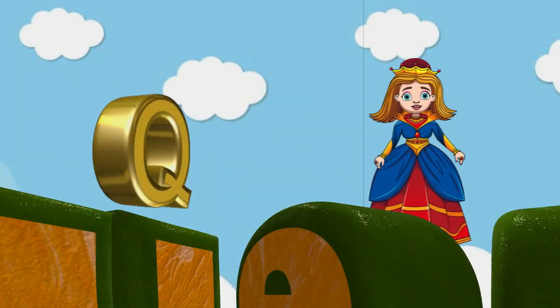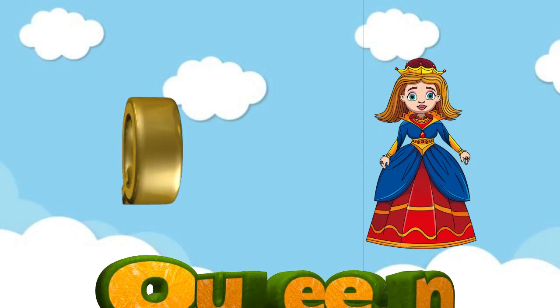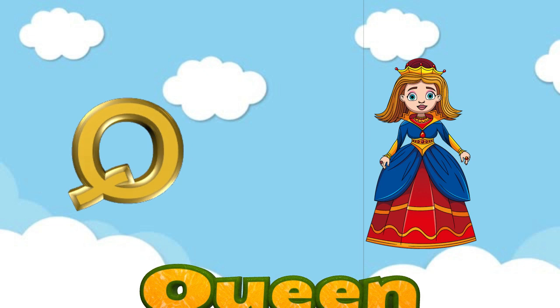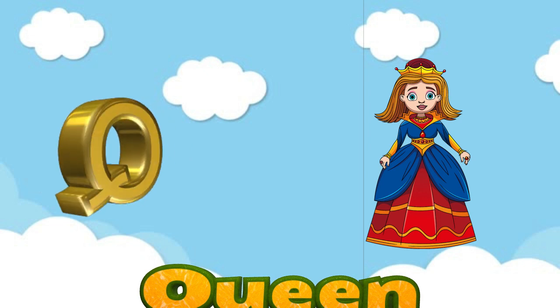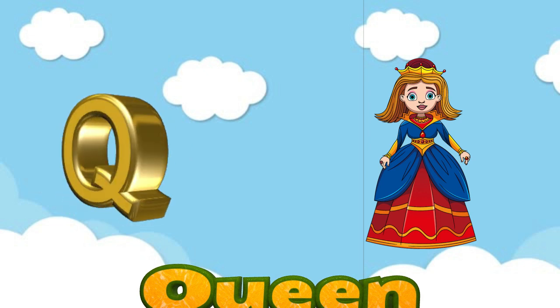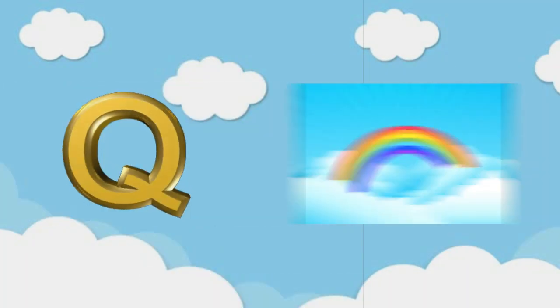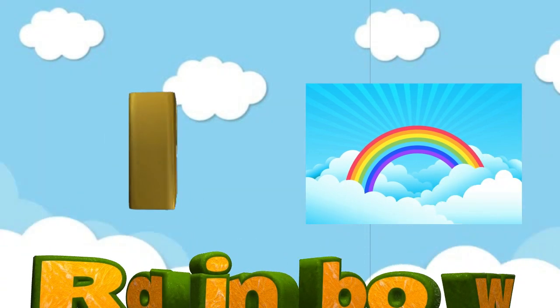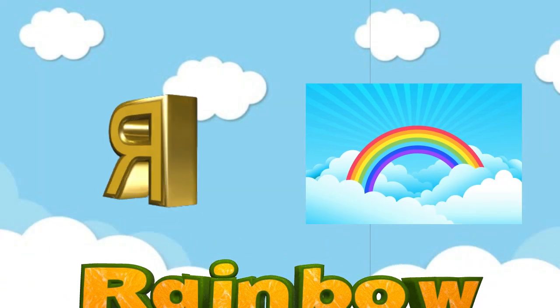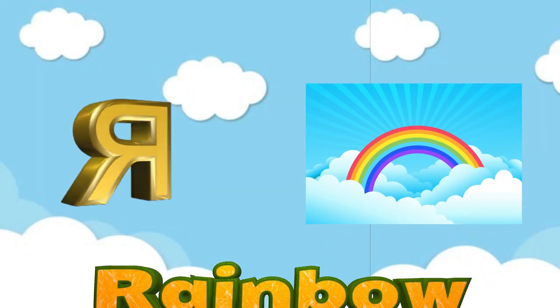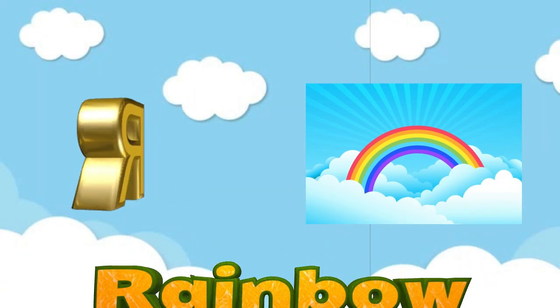P is for Pony. P-P-Pony, P-P-Pony, P, Pony. Q is for Queen. Q-Q-Queen, Q-Q-Queen, Q, Queen. R is for Rainbow. R-R-Rainbow, R-R-Rainbow.